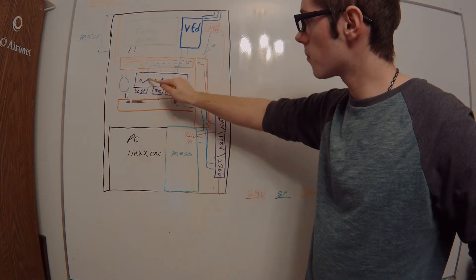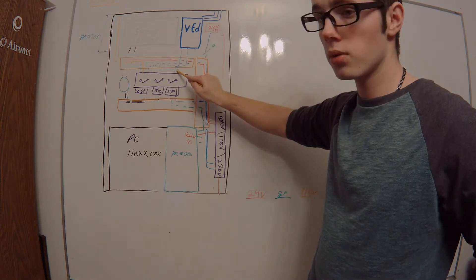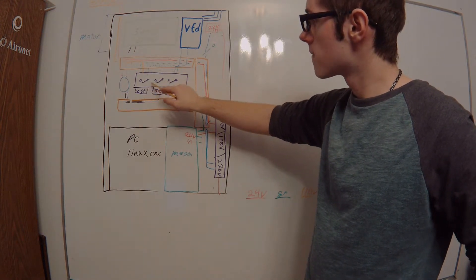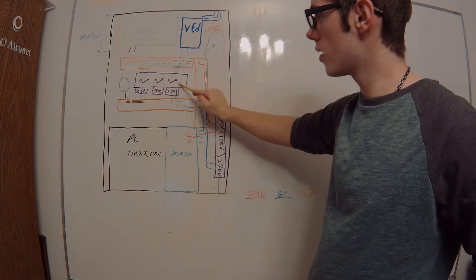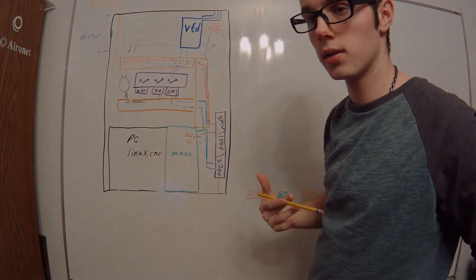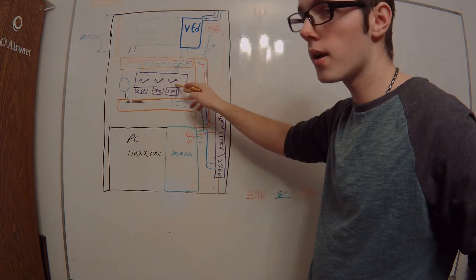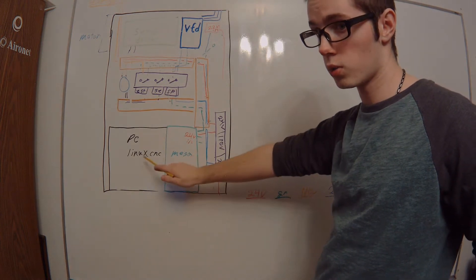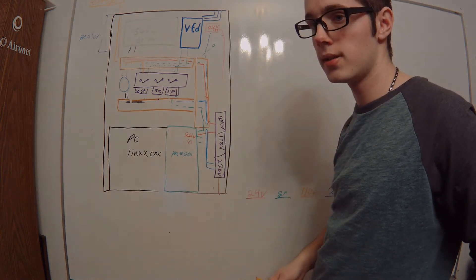And the E-stop relay is what supplies ground for these relays to be slipped. So if you want any of these other two to be running, this has to be getting a constant signal. Otherwise, it's going to break it here, and it's going to break it down here at the Mesa card, which will stop it on the PC itself.